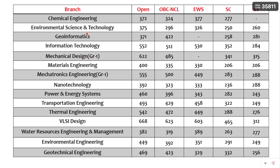Here you can see the various branches offered by NIT Surat Kal. The first branch is Chemical Engineering — Open: 372, OBC-NCL: 324, EWS: 377, HC: 277. Branches also include Environmental Science and Technology, Geoinformatics (a specialization in Civil Engineering), Information Technology, Mechanical Design, Materials Engineering, Mechatronics, Nanotechnology, Power and Energy Systems, and Transportation Engineering. For Transportation Engineering the cutoffs are Open: 493, OBC-NCL: 429, EWS: 458, HC: 322, HT: 249.